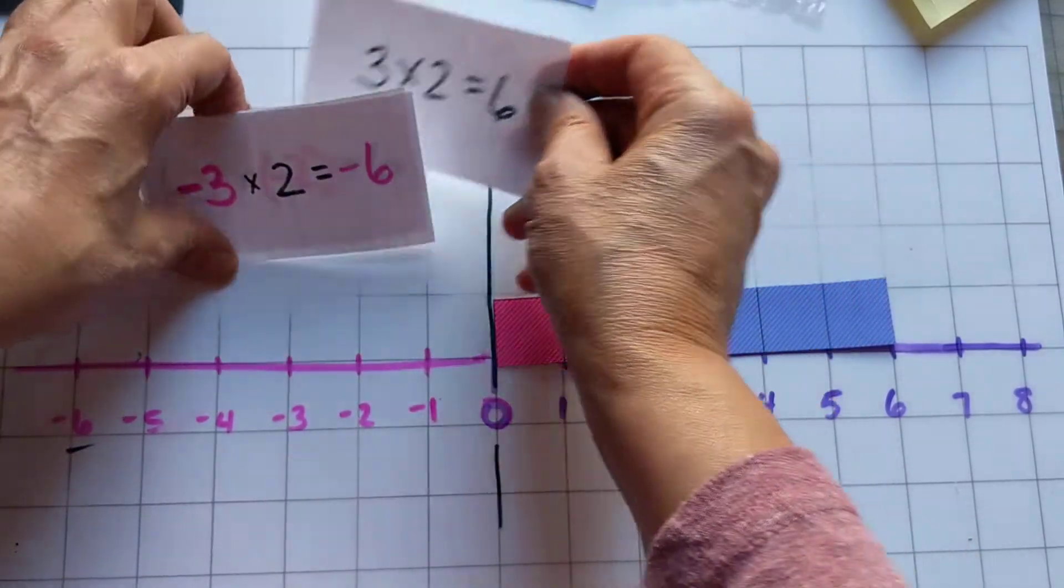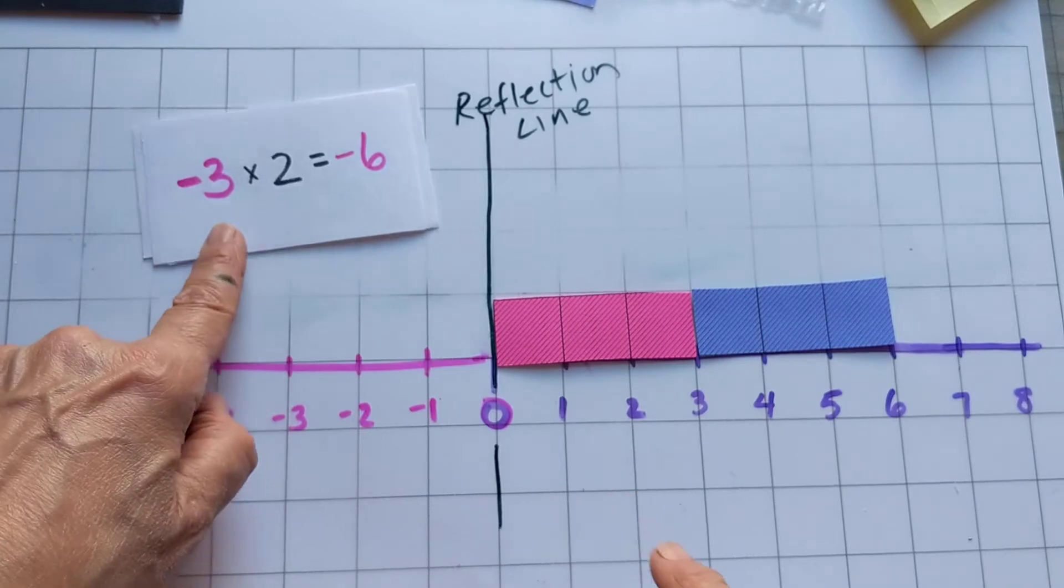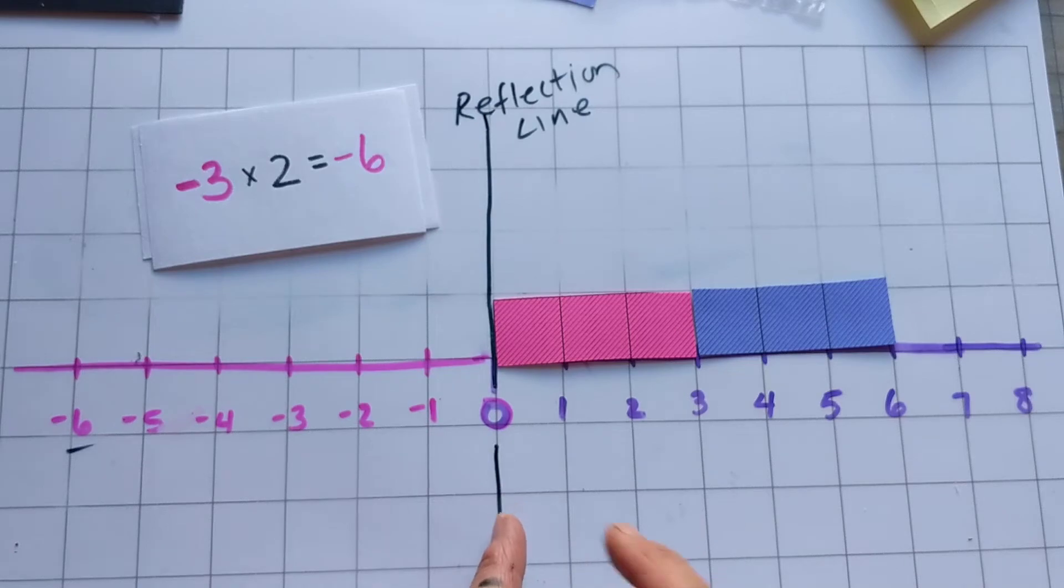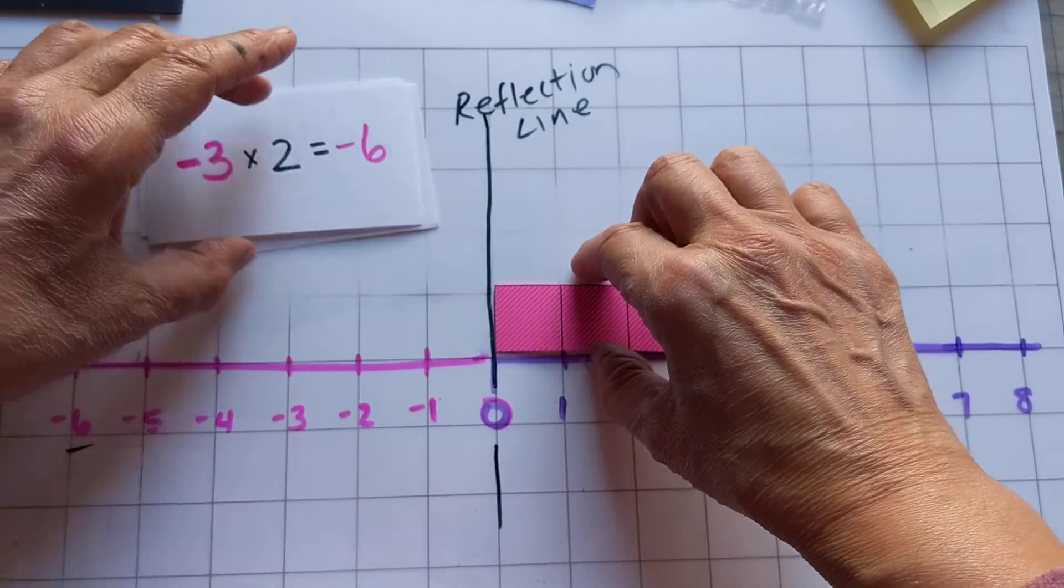What happens when you introduce a negative number is what that negative number is asking you to do is reflect your quantity over the zero line, the reflection line, the origin.